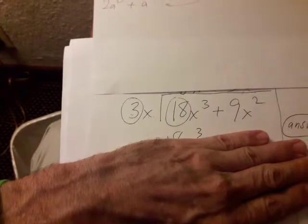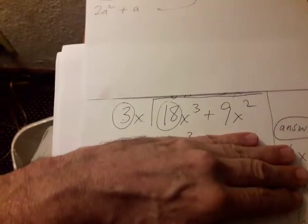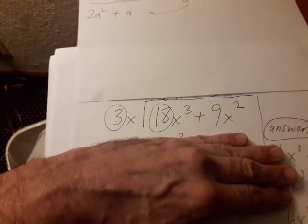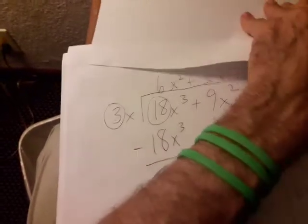Now you look at the 3x and you say, okay, 3 times what makes 18? Well, that's 6. x times what makes x cubed? x squared. So that's why you get that part there.